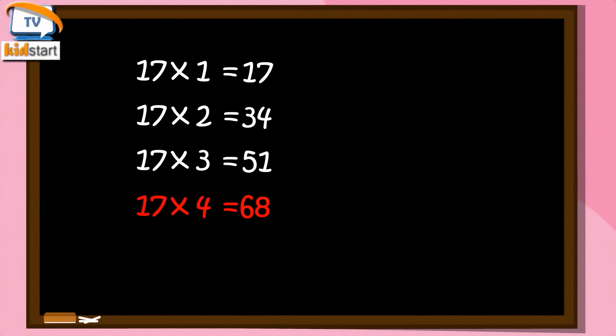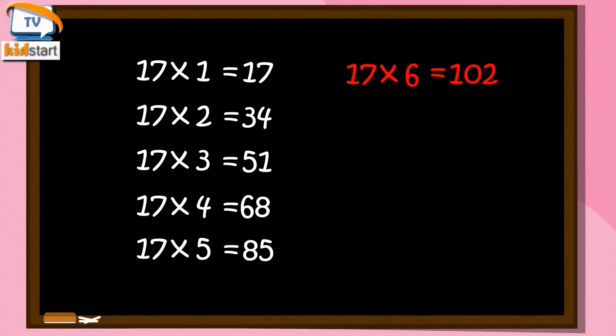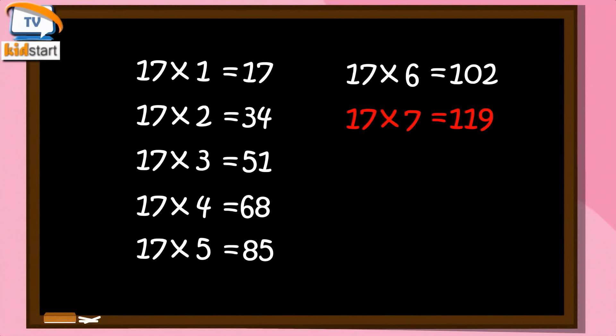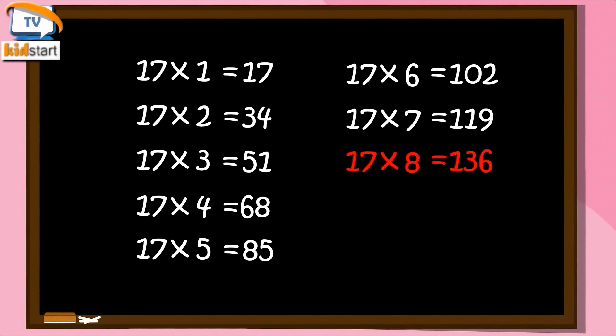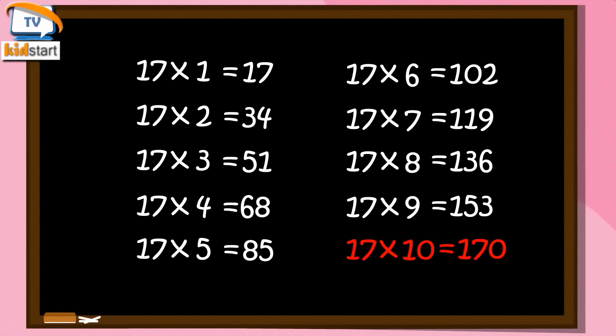Seventeen ones are seventeen. Seventeen fours are sixty-eight. Seventeen fives are eighty-five. Seventeen sixes are one hundred two. Seventeen sevens are one hundred nineteen. Seventeen eights are one hundred thirty-six. Seventeen nines are one hundred fifty-three. Seventeen tens are one hundred seventy.